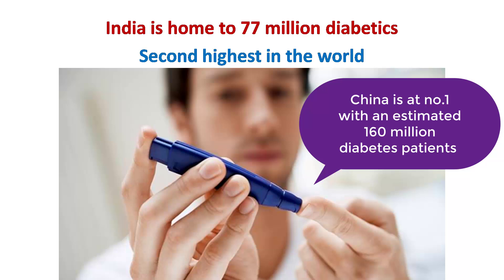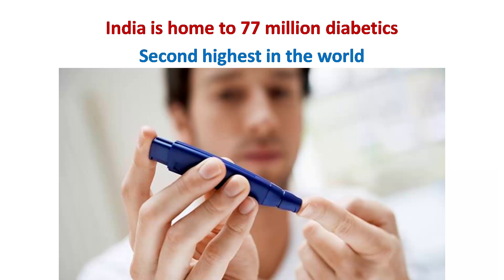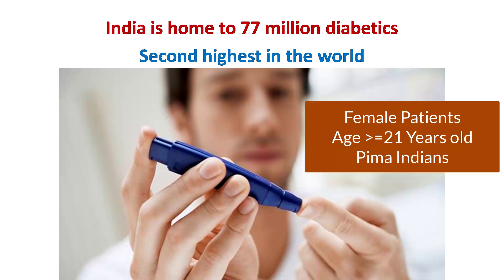The objective of the dataset is to predict whether or not a patient has diabetes based on diagnostic measurements included in the dataset. Several constraints were placed on the selection of these instances from a big database. In particular, all patients here are females, at least 21 years old of Pima Indian heritage.